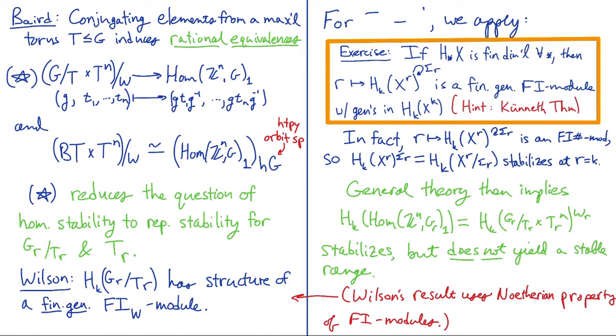So that's sort of half of the picture. And the other half, the other side is the torus, S^1 to the r. Let's think of the unitary groups where the maximal torus in U_R is just a copy of S^1 to the r. And so there, it's a nice exercise, sort of maybe the simplest example of a finitely generated FI module arising topologically.